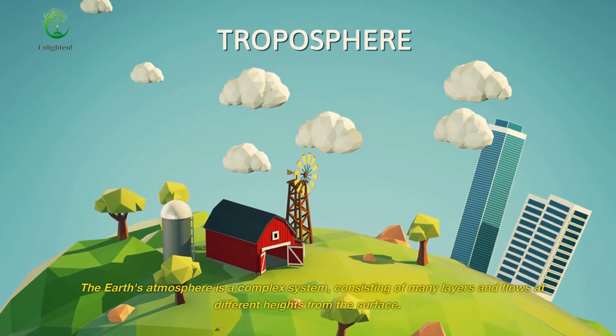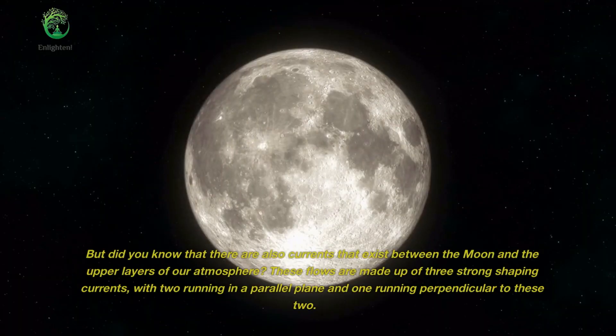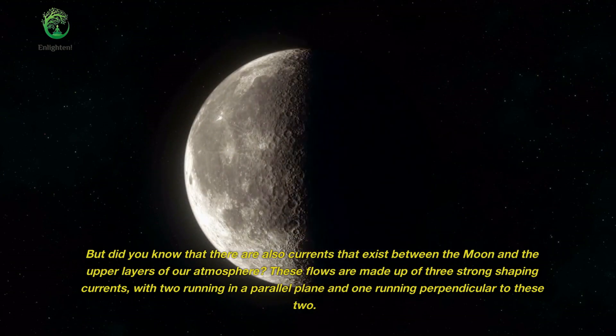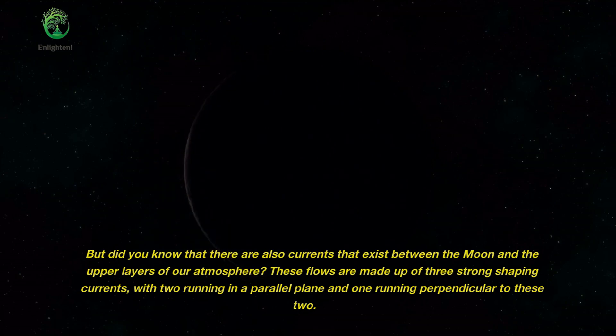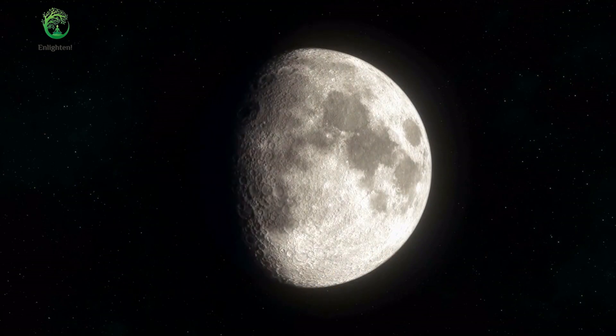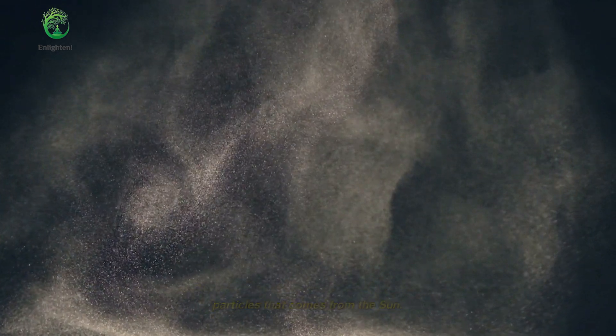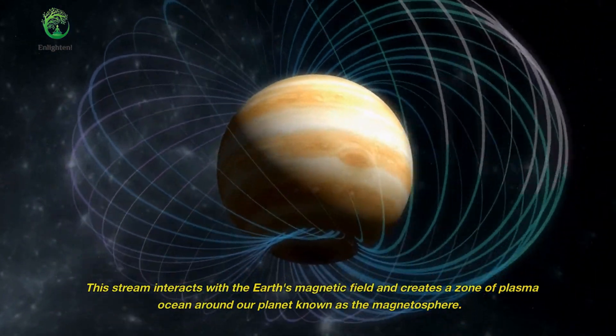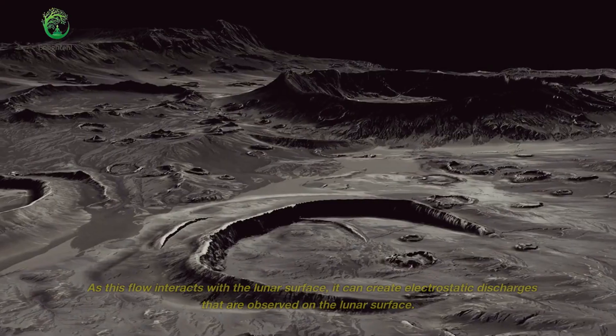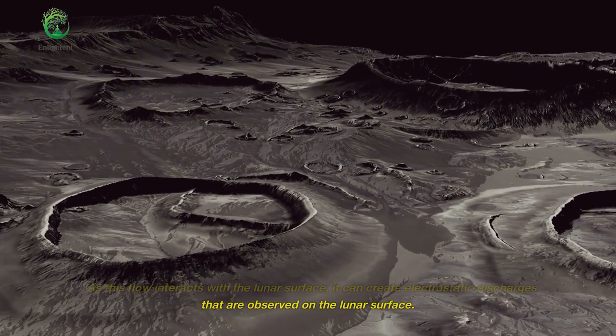The Earth's atmosphere is a complex system, consisting of many layers and flows at different heights from the surface. But did you know that there are also currents that exist between the Moon and the upper layers of our atmosphere? These flows are made up of three strong shaping currents, with two running in a parallel plane and one running perpendicular to these two. The first of these currents is the solar wind stream, a constant flow of charged particles that comes from the Sun. This stream interacts with the Earth's magnetic field and creates a zone of plasma ocean around our planet known as the magnetosphere. As this flow interacts with the lunar surface, it can create electrostatic discharges that are observed on the lunar surface.